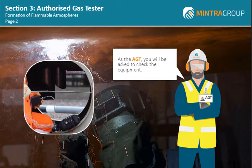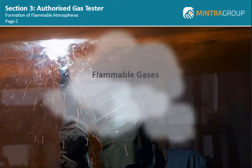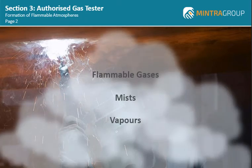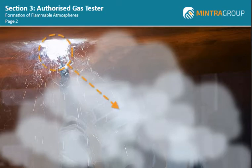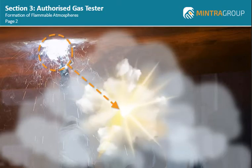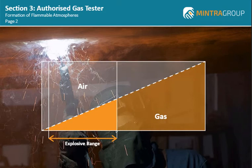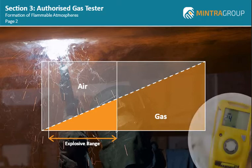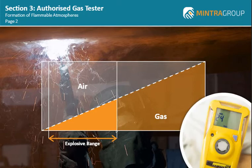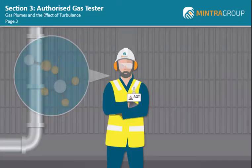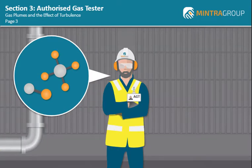Explosive atmospheres can be caused by flammable gases, mists, or vapors. If there is enough of a particular substance mixed with air, then all that is required is a source of ignition to cause an explosion. The gas-to-air ratio that will cause an explosive atmosphere varies depending on the type of gas, but the testing equipment we use will alert us before the flammable atmosphere reaches a point where an explosion can occur.